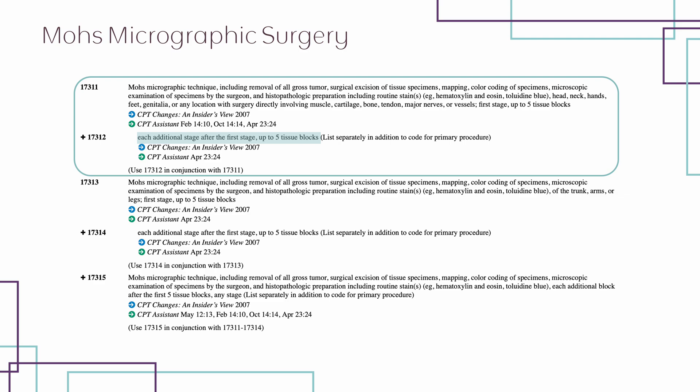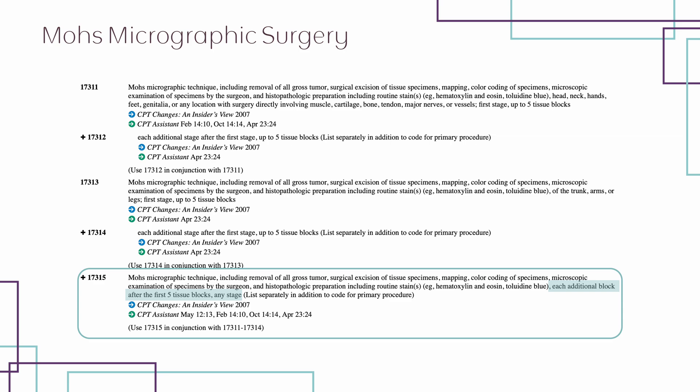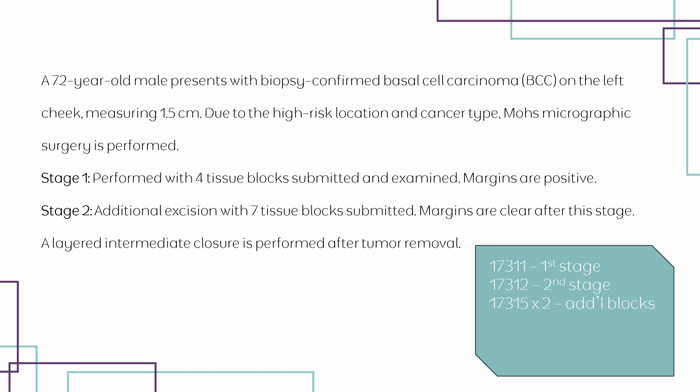The second stage has seven blocks; however, code 17312 only includes up to five blocks within that additional stage. For the sixth and seventh blocks, code 17315 applies to Mohs procedures with blocks beyond the first five for any stage, so we report two units of 17315. To recap: 17311 for the first stage, 17312 for the second stage up to the first five blocks, and two units of 17315 for the sixth and seventh blocks within the second stage.